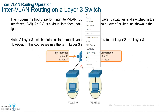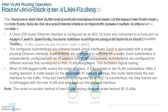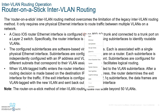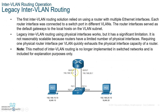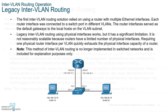With router-on-a-stick, on the other hand, there will be only one trunk for all the VLANs created on the switch. Write this down: inter-VLAN routing is to allow hosts in different VLANs to communicate with each other. You may use a router or a Layer 3 switch to accomplish this, and we will do this in our next video in Packet Tracer.